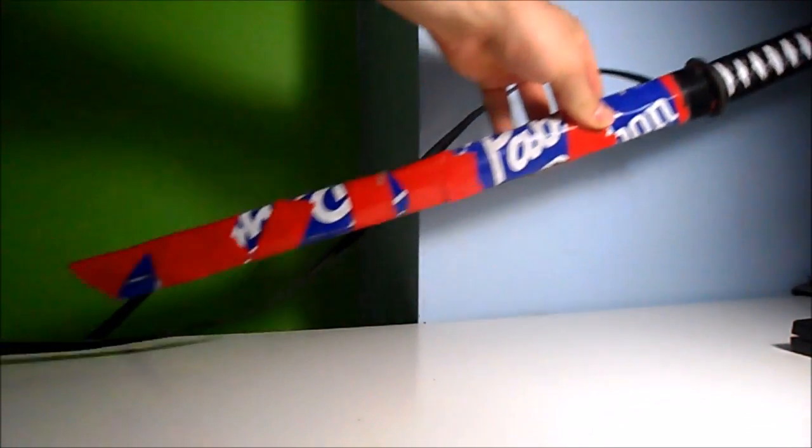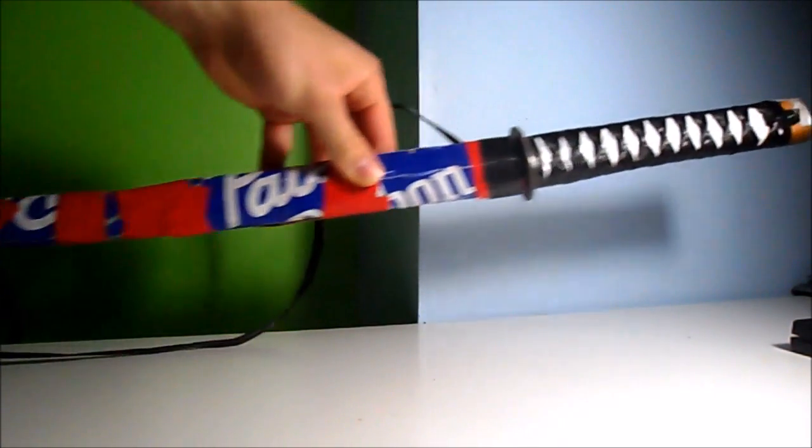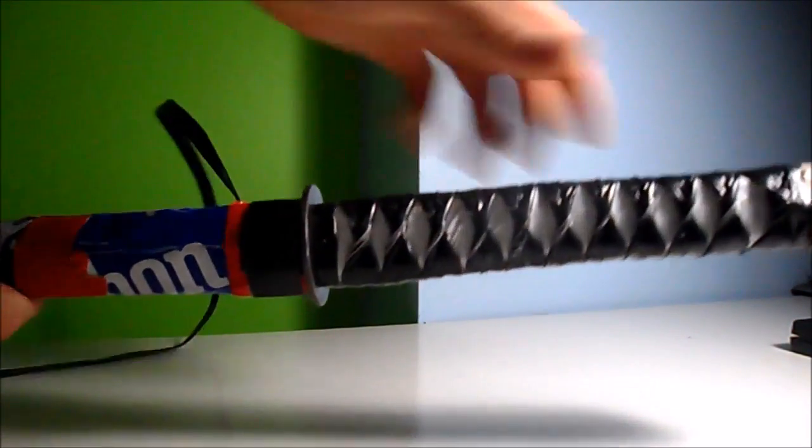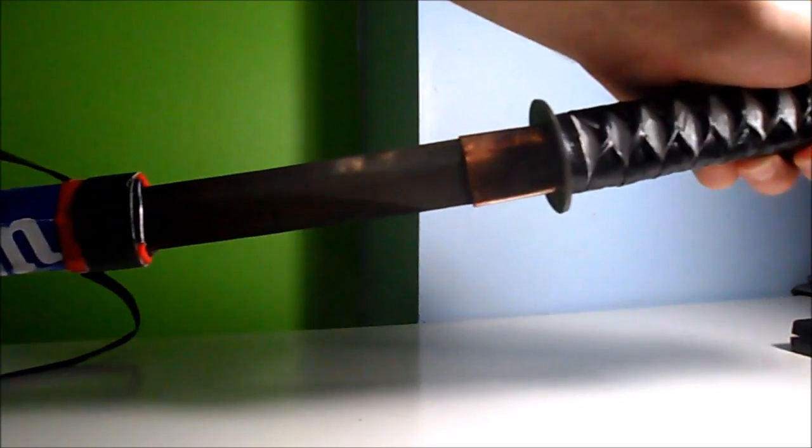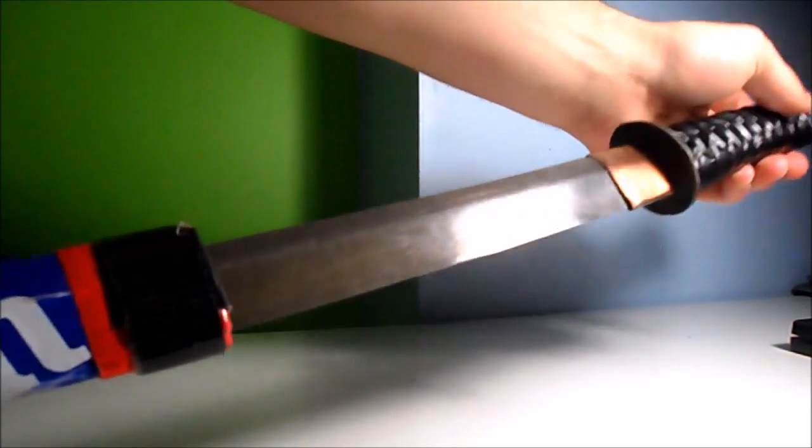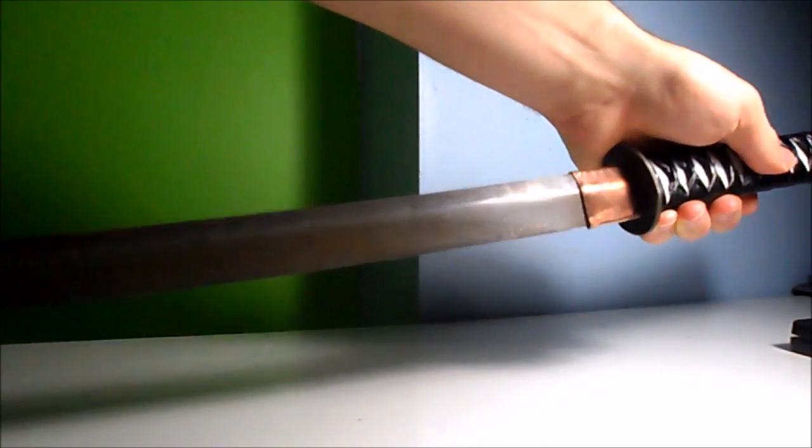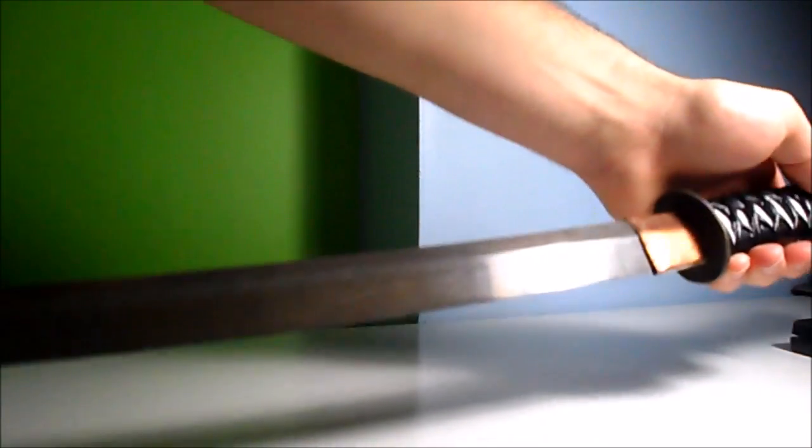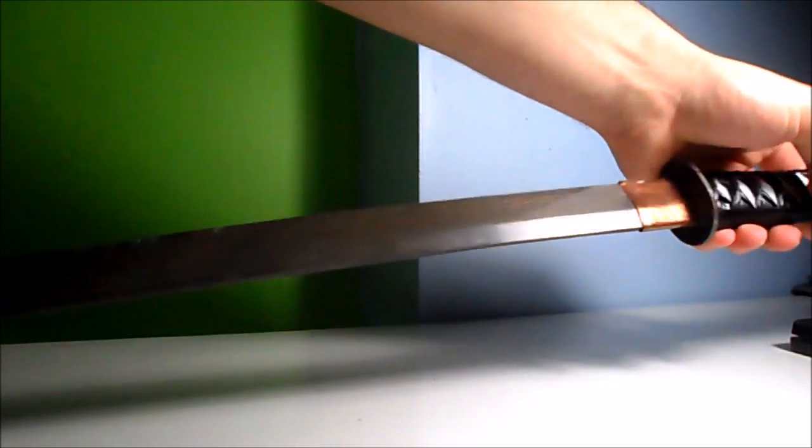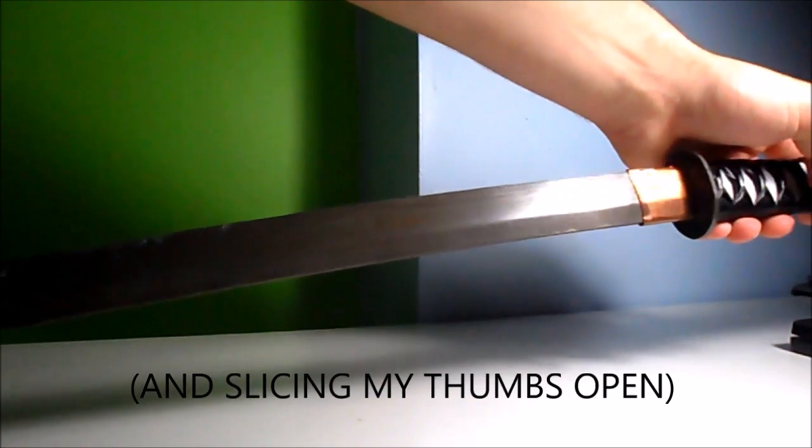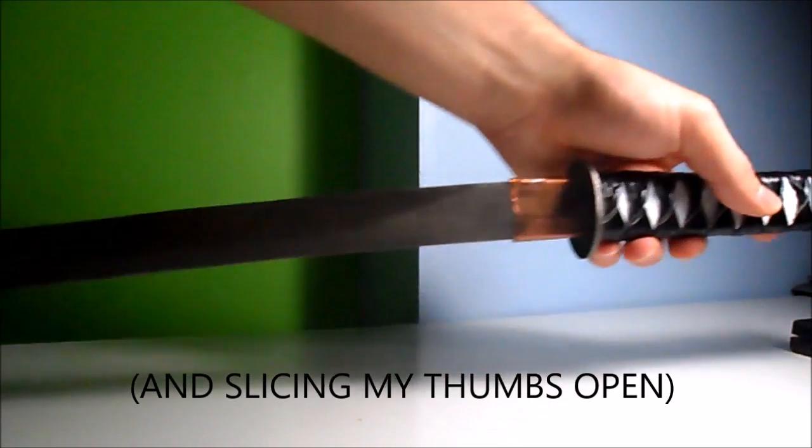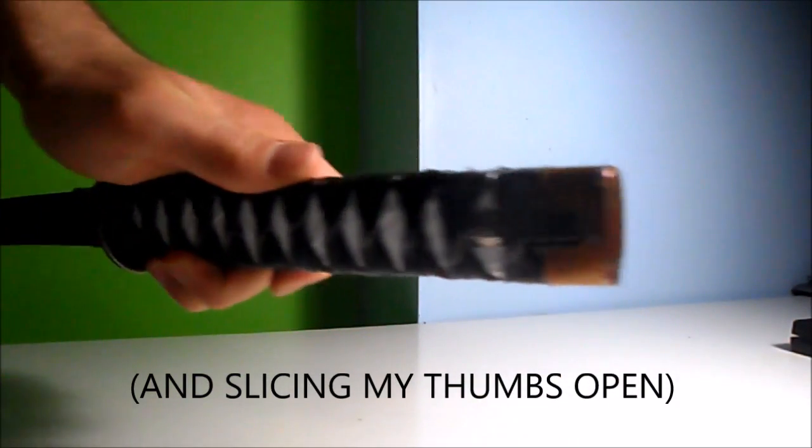In this video we'll be testing how sharp a Japanese sword is. This one happens to be made by me and is a 128-layer Damascus steel. It's been sharpened using traditional Japanese water stones going up to 2000 grit and is capable of shaving hair off your arm.